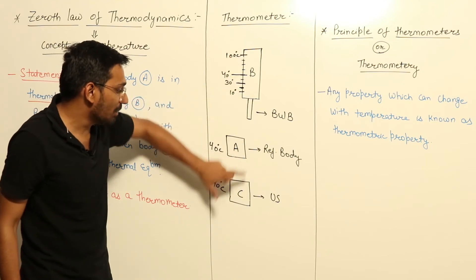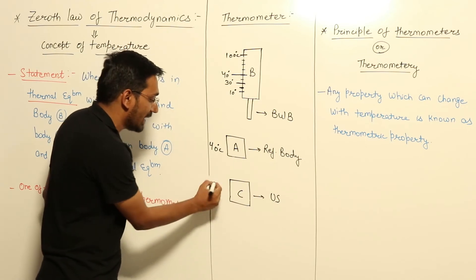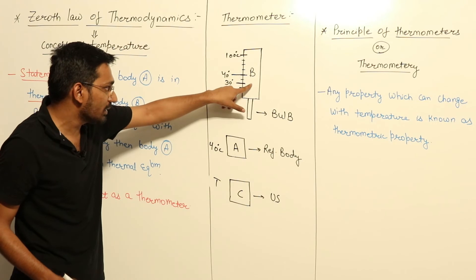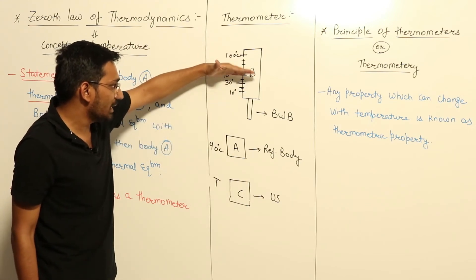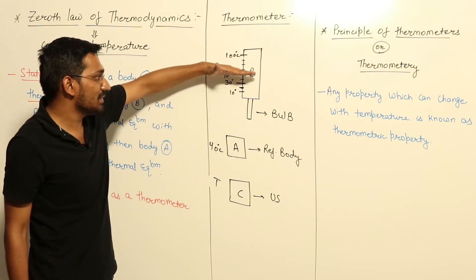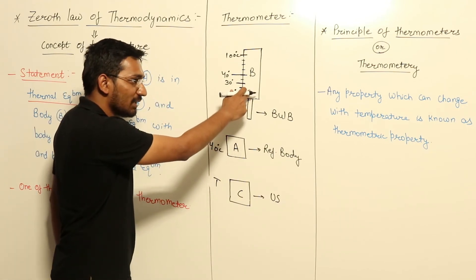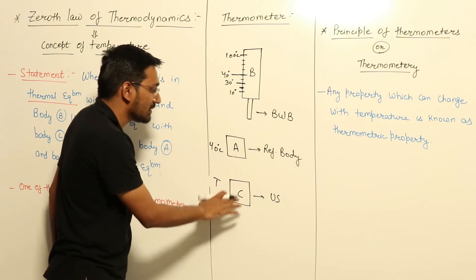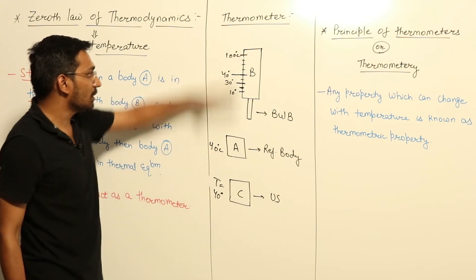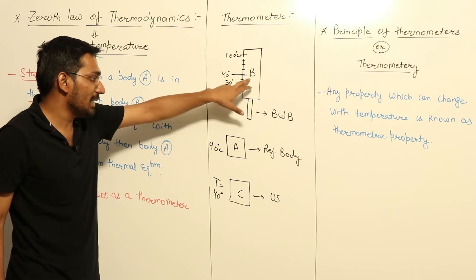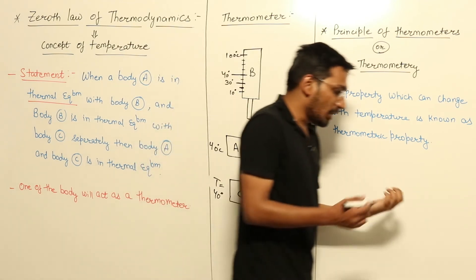If body B and body C are in thermal equilibrium, mercury attains this height at 40 degrees Celsius. If body B and body A are in thermal equilibrium and mercury is also attaining this height, then the temperature of body A is 40 degrees Celsius. So because of the Zeroth Law - if body A and body B are in thermal equilibrium, and body B and body C are in thermal equilibrium - that means the temperature of body A and body C are the same. So we can say that the temperature of body C at that time is 40 degrees Celsius. This is the concept of how a thermometer works - the thermometer acts as body B, a reference body, on which experiments are performed to make the readings.